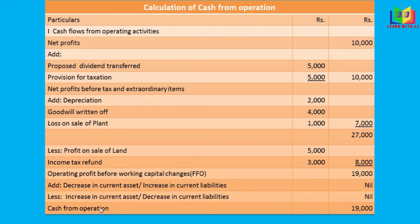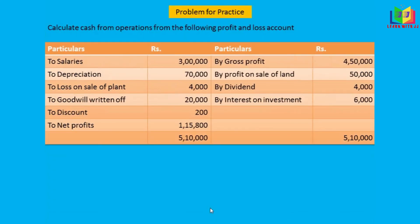This format follows Accounting Standard 3 (AS-3) and is considered the indirect method for calculating cash from operations. It is a new format and very easy to calculate. I have given you a similar problem to practice — work it out and comment your answer, and I will check it. Thank you for your patient listening.